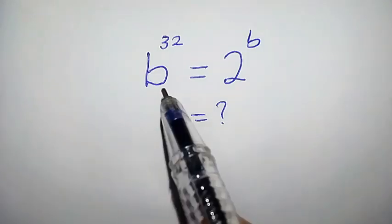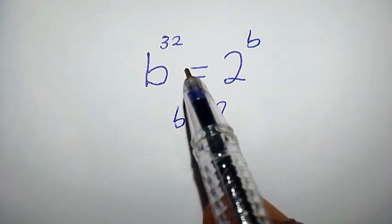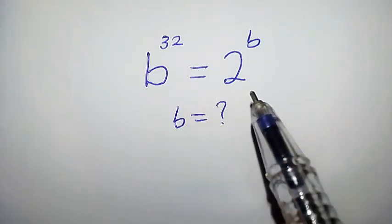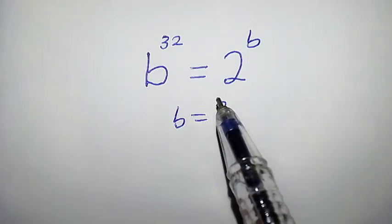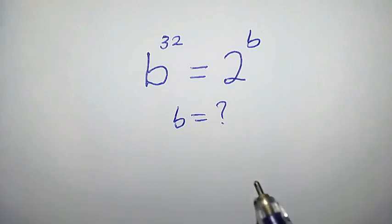Hello, welcome. b to the power of 32 equal to 2 to the power of b. How do we solve for b?